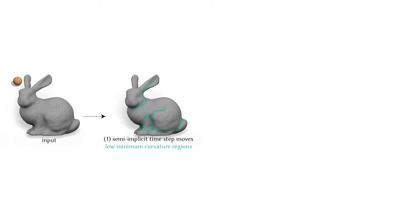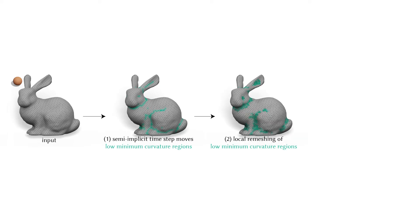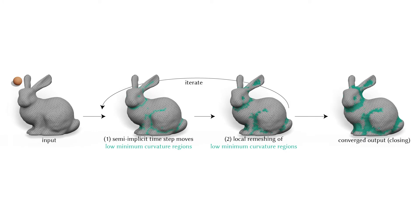At each iteration, we identify the regions of high principal curvature. We carry out a step of our flow as an energy minimization, which only involves these regions, and then we apply to them a local remesher. We repeat these steps until convergence. Convex regions are maintained exactly throughout our flow.